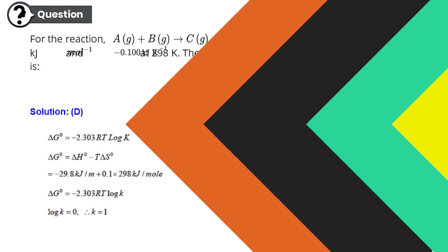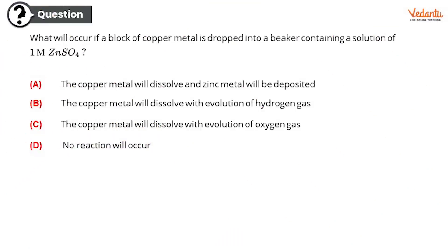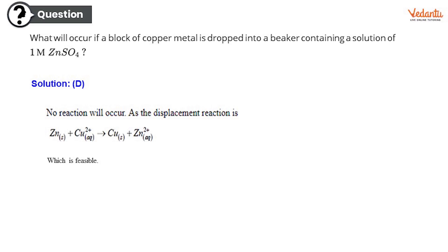Moving ahead with the next question. What will occur if a block of copper metal is dropped into a beaker containing a solution of one molarity of zinc sulfate ZnSO4? These are the four options. The copper metal will dissolve and zinc metal will be deposited. Or the copper metal will dissolve and the evolution of hydrogen gas will happen. Or the copper metal will dissolve and the evolution of oxygen gas will happen. Or there will be absolutely no reaction. Which of these is correct option? So the answer is D. No reaction will occur at all. Reason being is simple that no reaction will occur because displacement reaction will be looking like this.